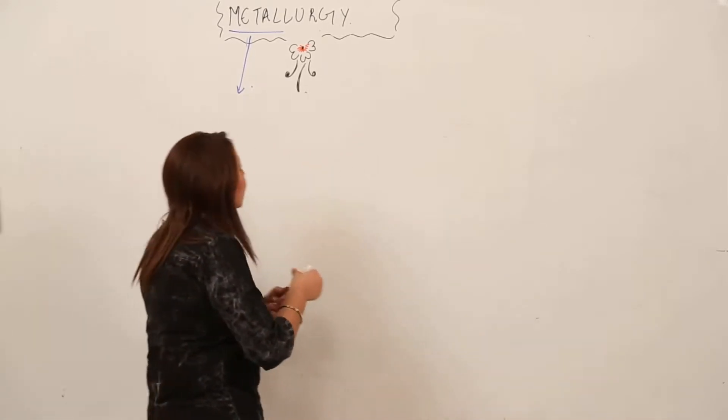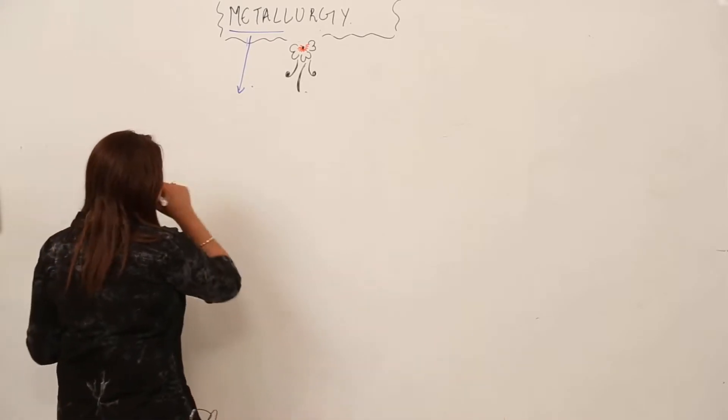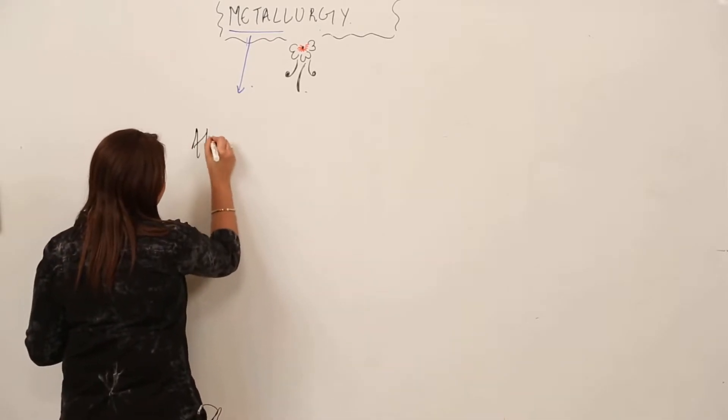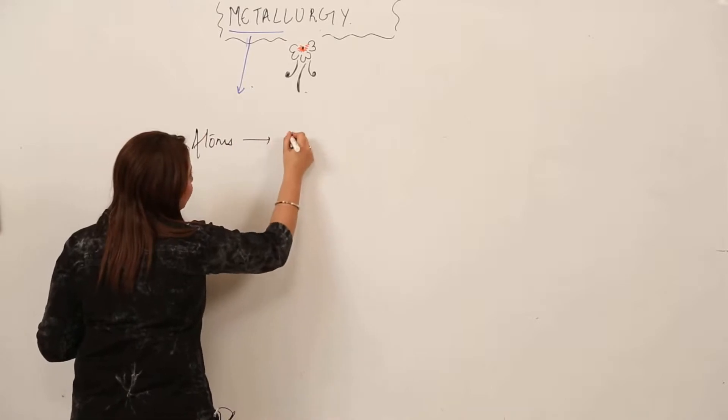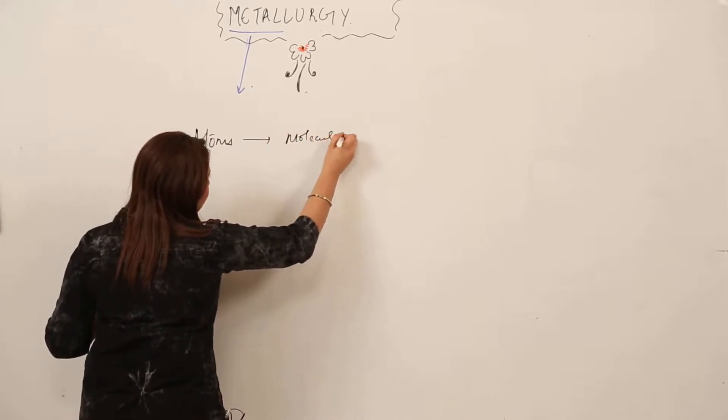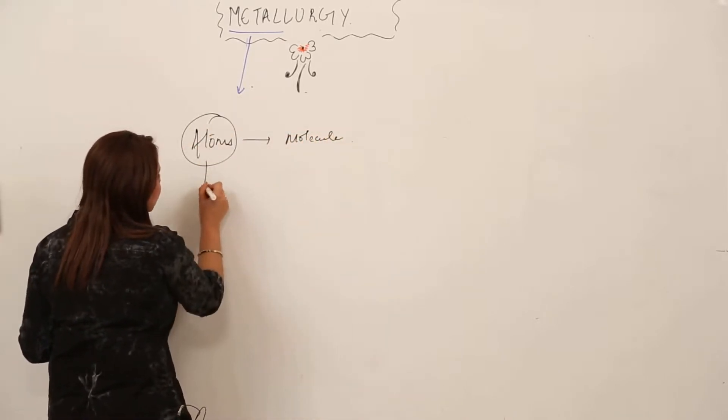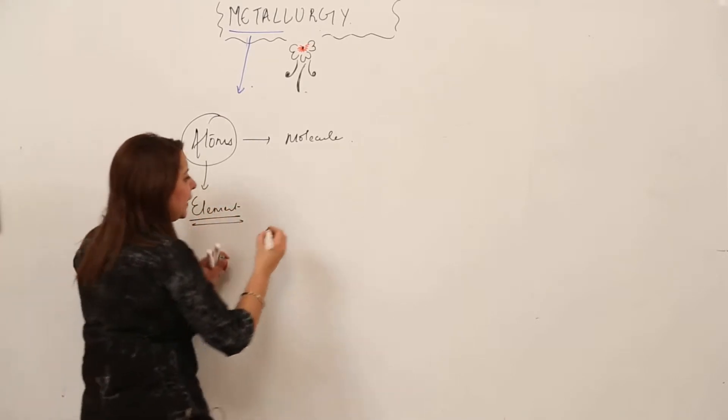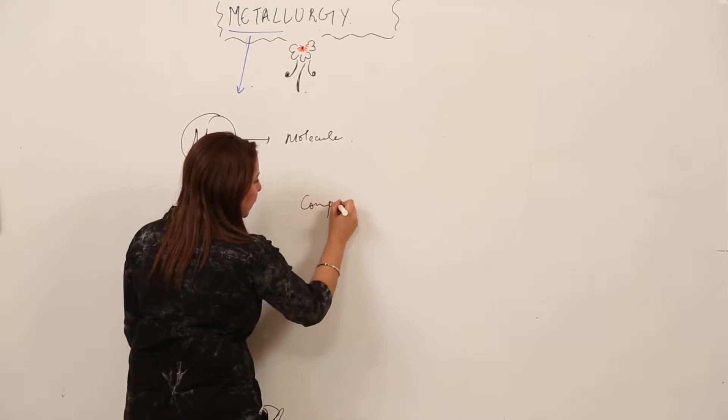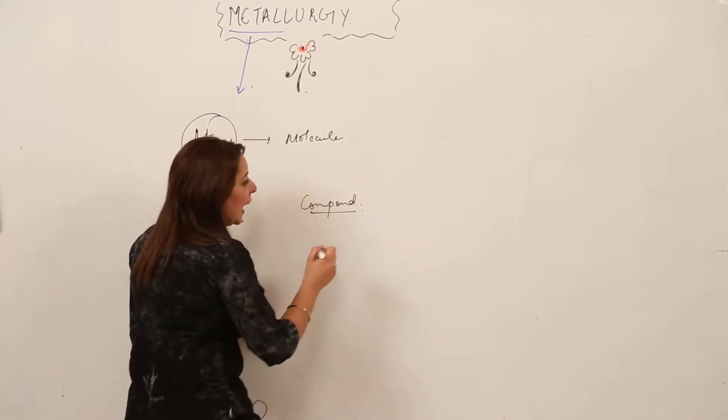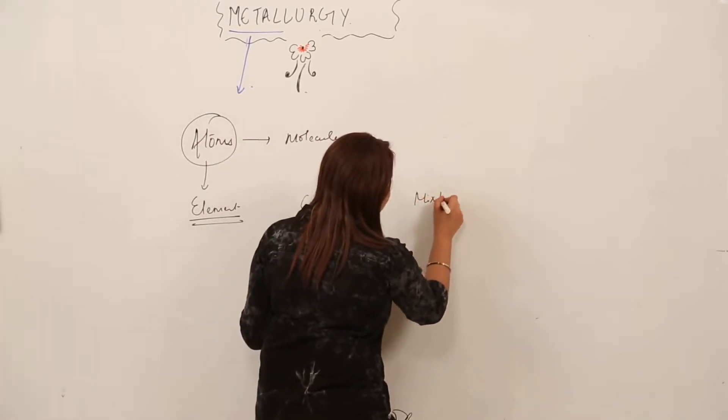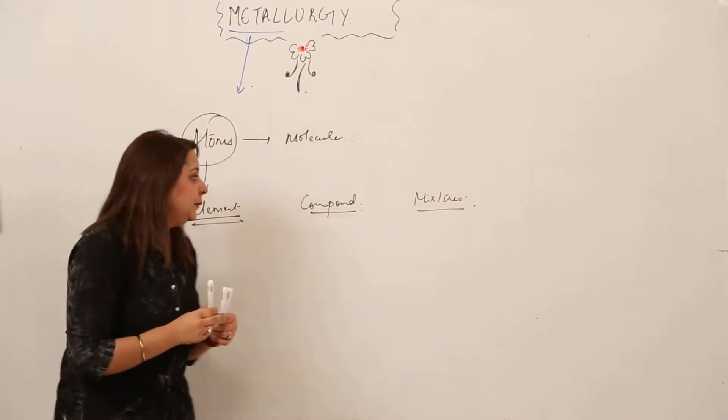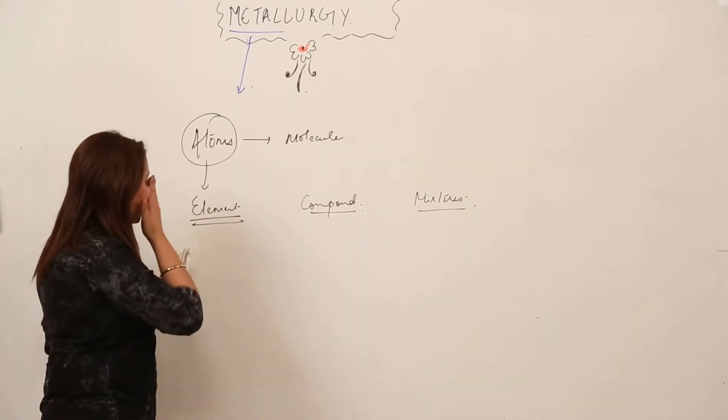You should know that we have atoms. Atoms combine to form molecules. And many atoms combine to form element. Elements combine to form compound. And different substances combine to form mixtures.